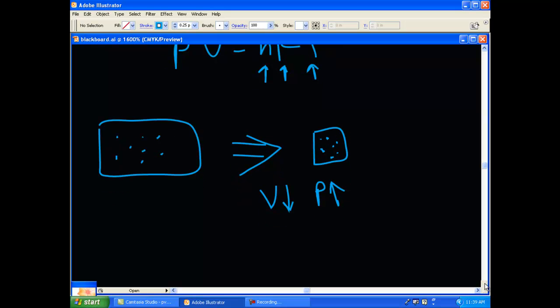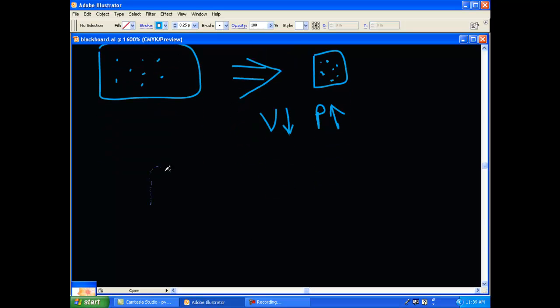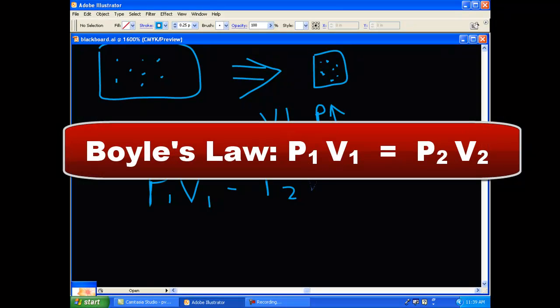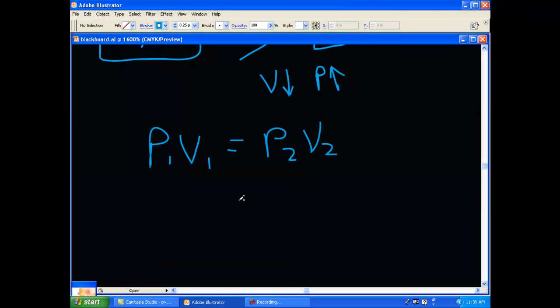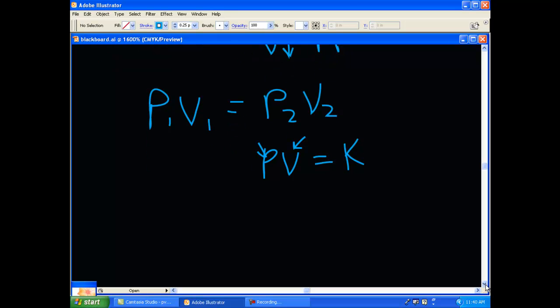And vice versa. Another way to write that would be P1 times V1 is equal to P2 times V2, or P times V is going to equal some constant, right? So in other words, if you change pressure in some way, then you're going to have to change volume in the opposite way to keep K the same, or that constant.